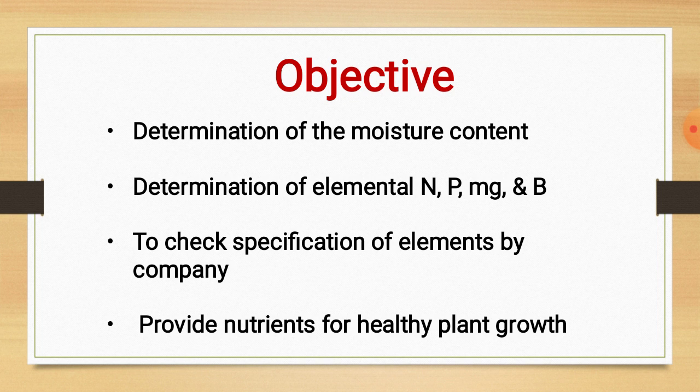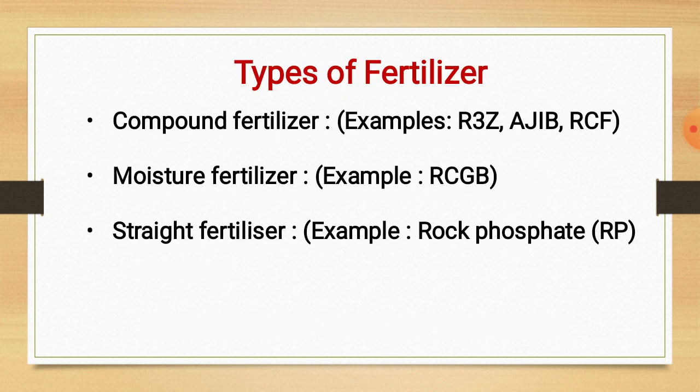Another objective is to provide nutrients for healthy plant growth. There are three types of fertilizers. The first is compound fertilizers — examples include R3Z, Ajib, and RCF. The second type is moisture fertilizer, with examples such as RCGB and RC phosphate.